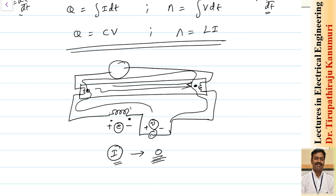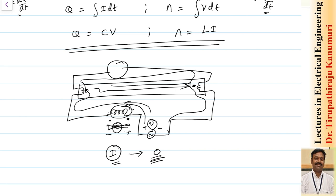Once the fluorescent lamp starts operating, the current begins to grow. As the current increases, the induced EMF acts in the opposite direction, opposing the rise in current and thereby limiting it. The choke coil thus performs two operations: initially its induced EMF aids the supply voltage to start the lamp, and once operating it limits the current without losing power, as the magnetic energy converts back to electrical energy.